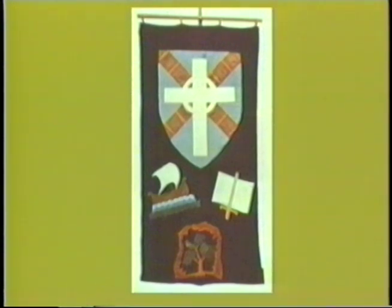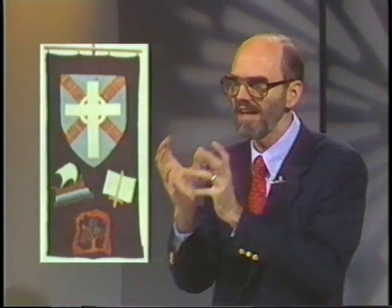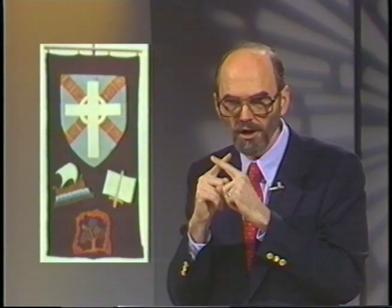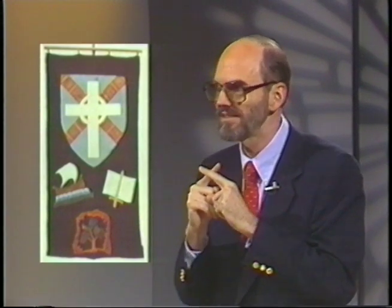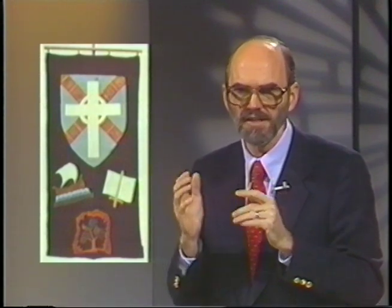John Knox studied in Geneva and took the Reformation teachings back to Scotland. Here's the banner for the Scots Confession of 1560. At the top is a Celtic cross—indigenous to Scotland. Behind the white Celtic cross there's a reddish X called a St. Andrew's cross. That's an authentic Scots plaid—the Hamilton plaid—because Patrick Hamilton was the first martyr for the Protestant faith in Scotland.